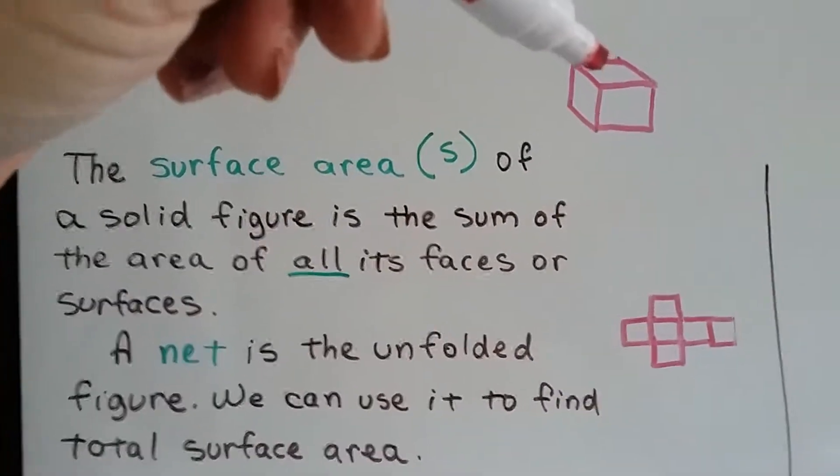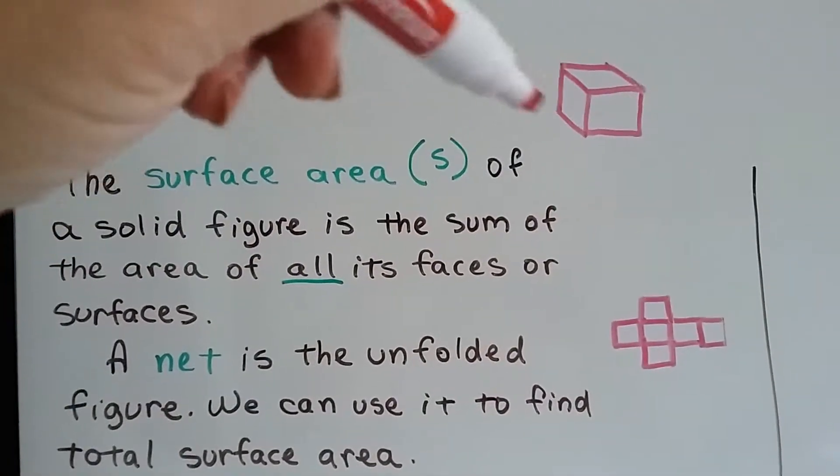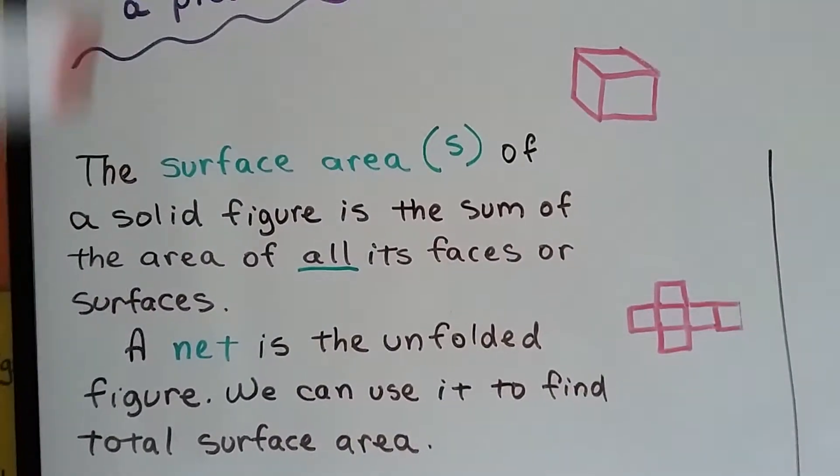The surface area of a solid figure is the sum of the area of all its faces or surfaces. So this cube would have a top surface, a bottom surface, and four surfaces going around the side. Four lateral surfaces.